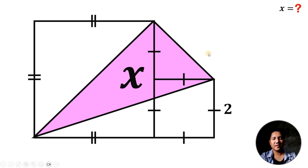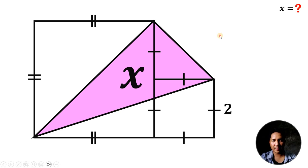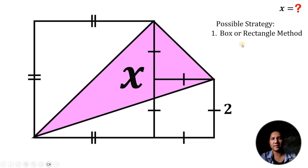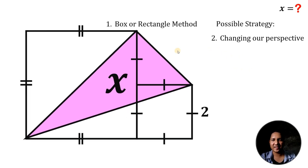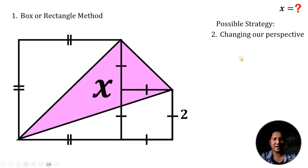This question is a suggested question by one of our viewers. Our goal here is to solve for the value of this area that is represented by x. Now we have two possible strategies to use in this kind of question. The first one is the box or rectangle method, and the second strategy is changing our perspective. Let's start with our first strategy, which is the box or rectangle method.